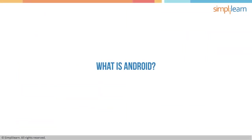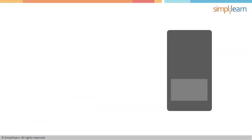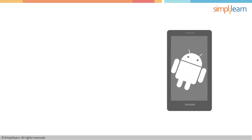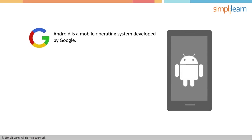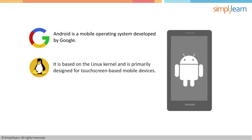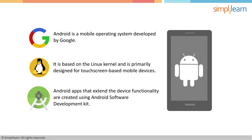What is Android? Android is a mobile operating system developed by Google, based on the Linux kernel, and is primarily designed for touchscreen-based mobile devices like smartphones and tablets. Android apps that extend the device functionality are created using the Android Software Development Kit, and often with a Java programming language that can access Android APIs.